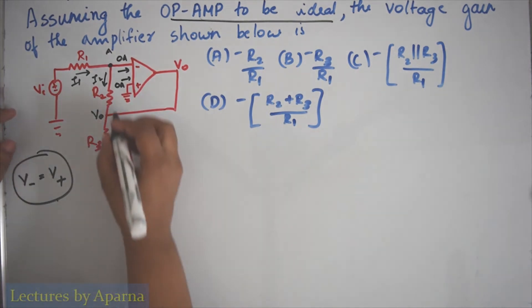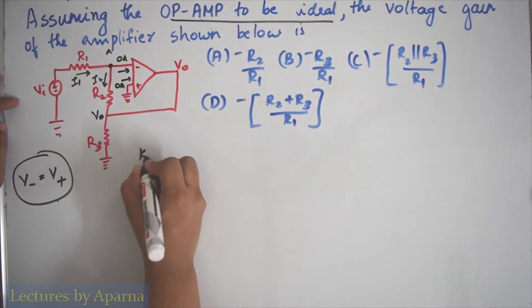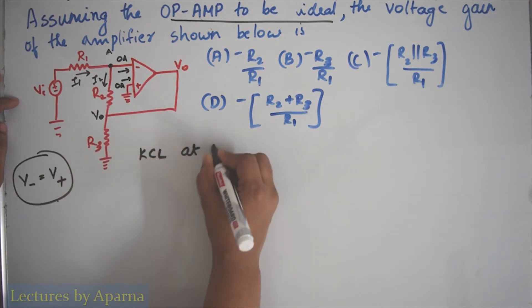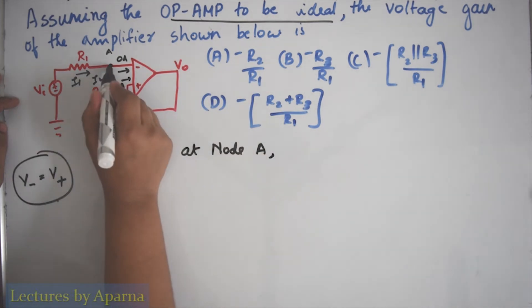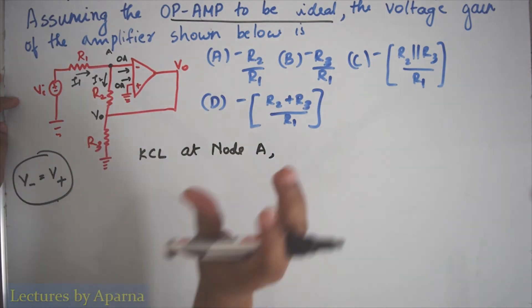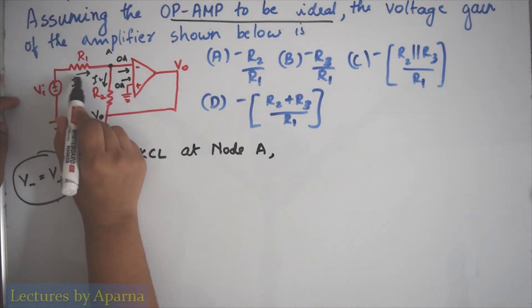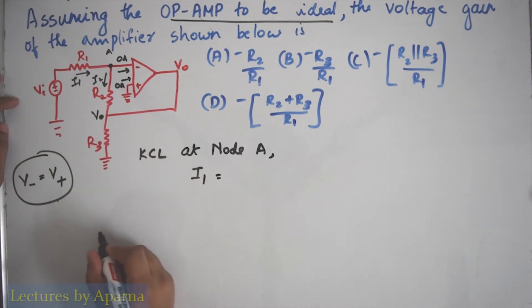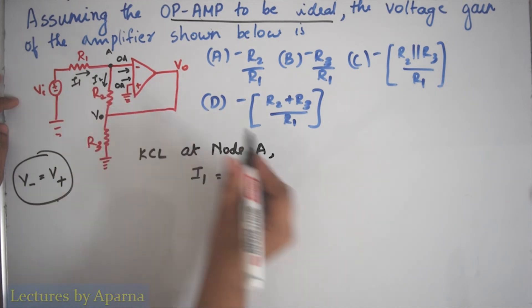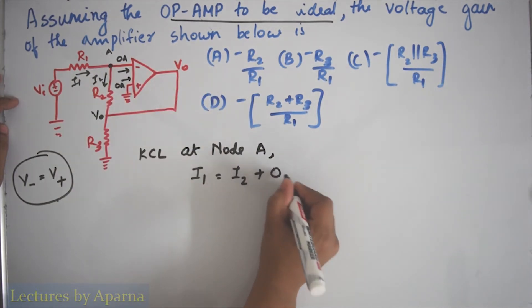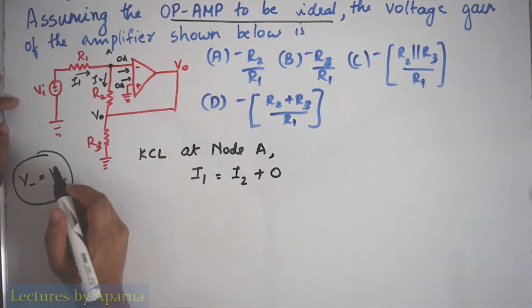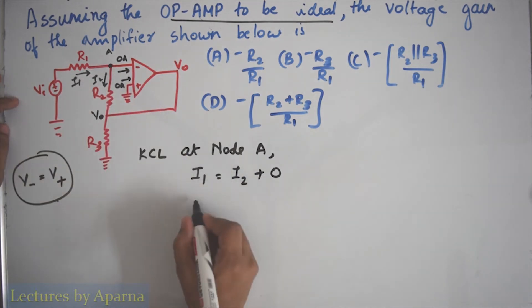I am going to apply KCL at node A. Applying KCL at this node, the current entering is equal to current leaving. Current entering is I1, which equals current leaving this node, I2 plus 0 ampere. So we get I1 is equal to I2.